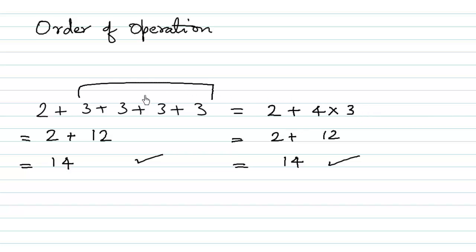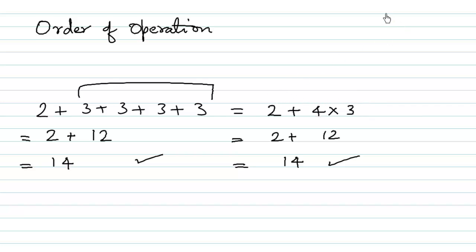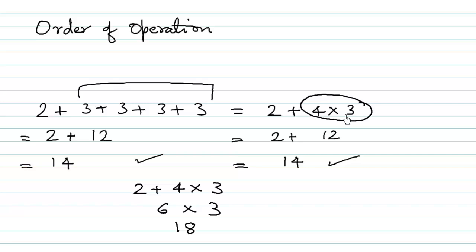What we can do is write the 2 plus as it is, and then write 3 plus 3 plus 3 plus 3 as 4 times 3. And we know that 4 times 3 is 12, just as 3 plus 3 plus 3 plus 3 is also 12. Then we can add the 2 to it, and 12 plus 2 is 14. So the answer in both cases is the same: 14.